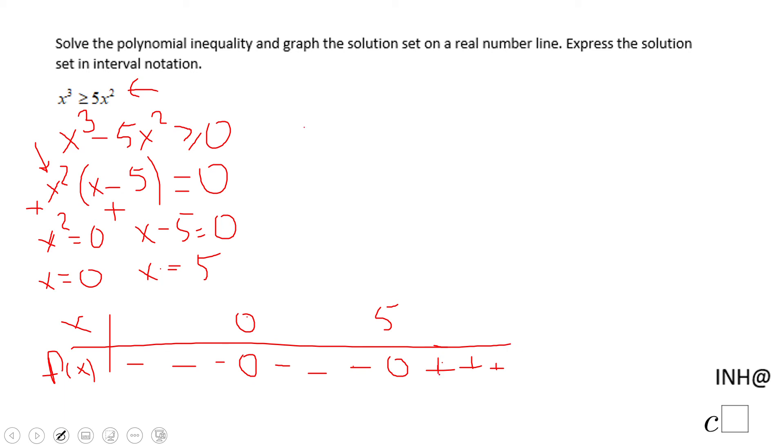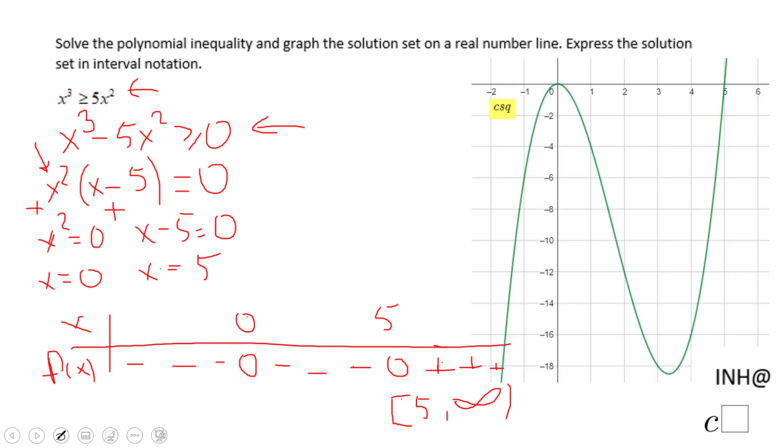So now if we look to the second inequality, which is equivalent to the one that we start from, the solution set will be this one from five to infinity. Be sure you put a bracket for five because we have the equal sign involved. You can see the same story here on this right side when the graph goes on top of the x-axis. That's the solution set.